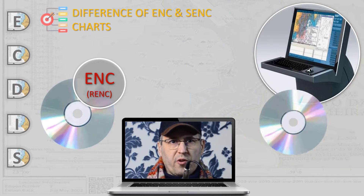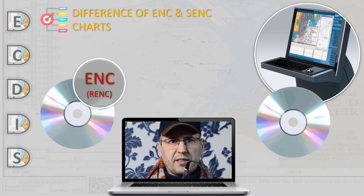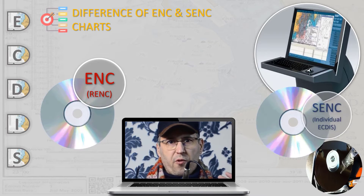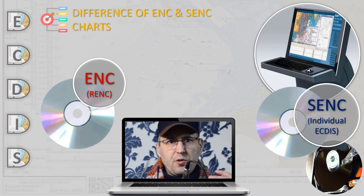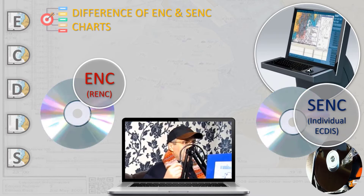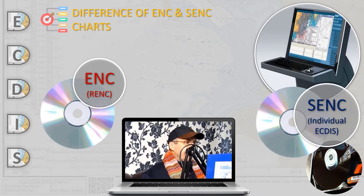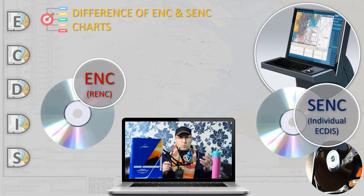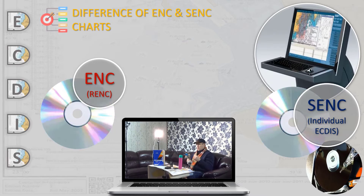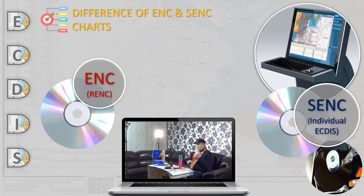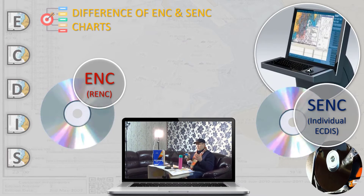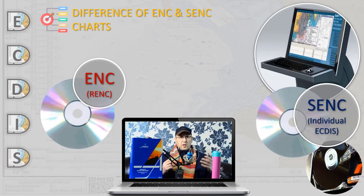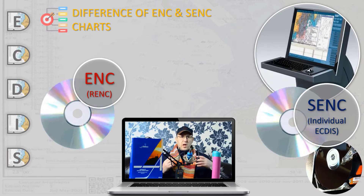SENC contains all the information of the ENC transferred into individual system formats of certain EGDIS producers. So information in SENC contains ENC data and objects used for navigation like position fixes of the own ship, waypoints, course line, correction and so on.